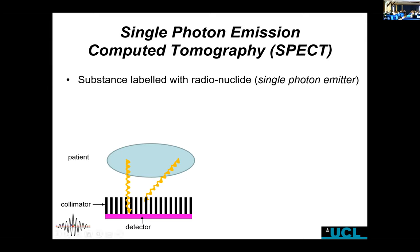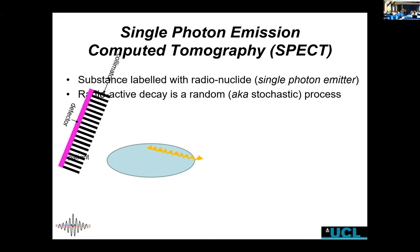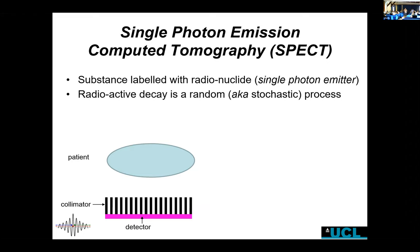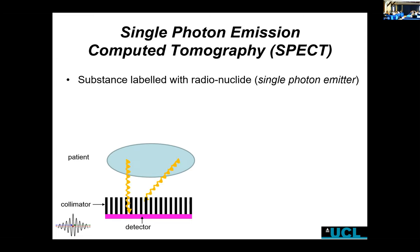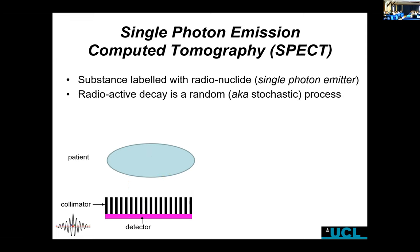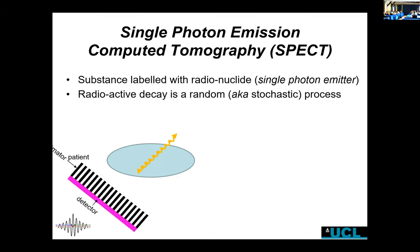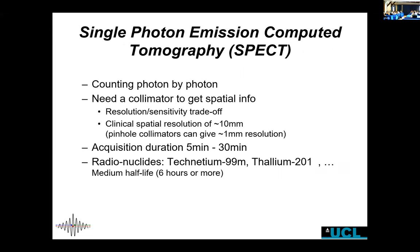We have the collimator in very different shapes — this is a parallel-hole collimator. You can't do tomography with this alone, so you have to rotate it around the patient. In practice people usually do 360 degrees, but it can be 180 degrees or less depending on the organ and how you want to image it. Radioactive decay happens at random points, and you can't inject too much, so we detect each gamma photon individually, which gives us a lot of noise in the data.